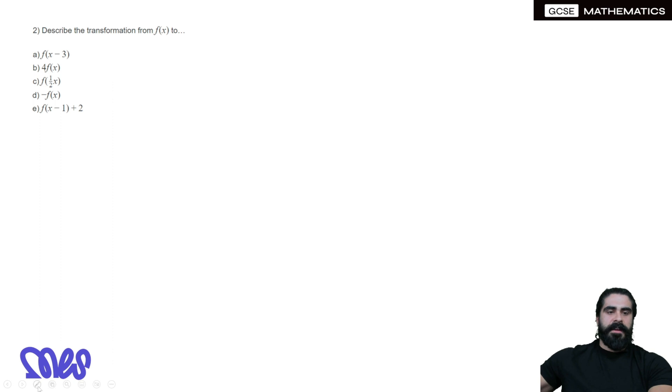Describe the transformation from f(x) to f(x - 3). Remember, that's a translation. We're moving 3 to the right, but we can't say that. We're saying it's a translation by the vector. We're going 3 to the right, in the positive direction, so the top number is 3, and no movement on the y-axis.